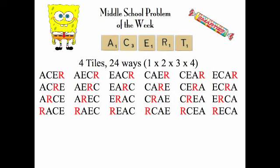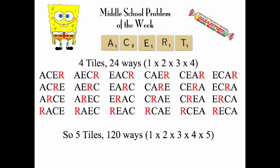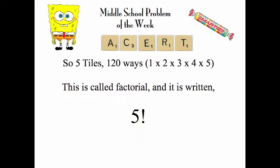While possible, it would be very difficult to write all the different ways that five tiles could be arranged. But we're going to assume that the pattern holds, and if it does, then five tiles can be arranged 120 ways — one times two times three times four times five. Many of you already know this is called factorial, and for the number five, it is written as five with an exclamation point.